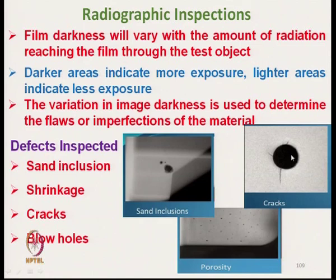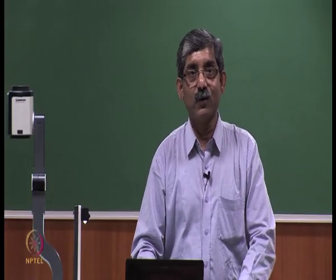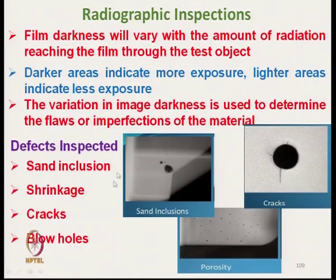If there is no defect present in the material, the darkness of the image will be uniform — there would not be any variation. Different types of defects can be inspected using the radiographic inspection technique: sand inclusion — if there is any sand particle inside the composite material, we can detect it using this technique. We can also detect cracks, shrinkage, or blow holes in the material.